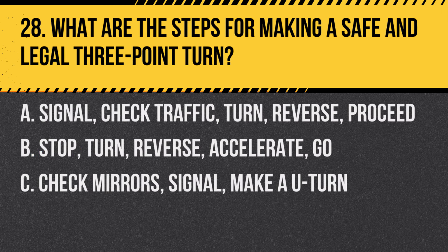Question 28: What are the steps for making a safe and legal three-point turn? A. Signal, check traffic, turn, reverse, proceed. B. Stop, turn, reverse, accelerate, go. C. Check mirrors, signal, make a U-turn. Answer: A. Signal, check traffic, turn, reverse, proceed. For a three-point turn, signal, check for traffic, then turn, reverse, and proceed when safe.